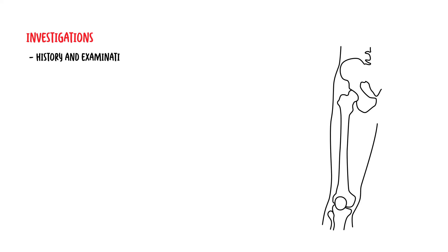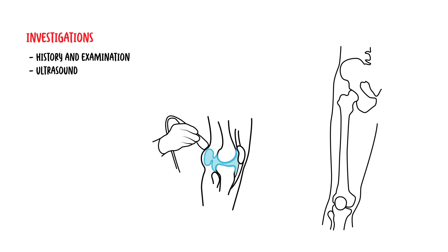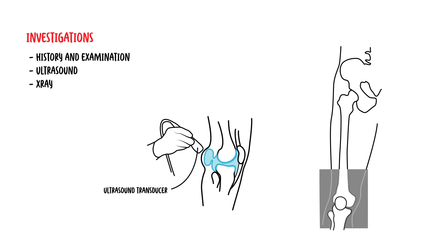Diagnosis of Baker's cysts is based on history and examination. If uncertain, an ultrasound or an x-ray of the area could be used. An MRI scan of the knee can also be used.